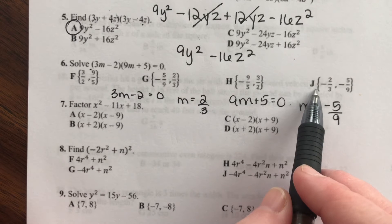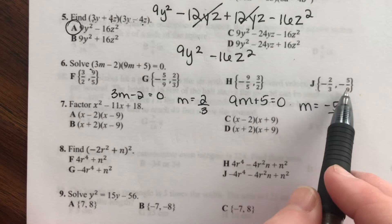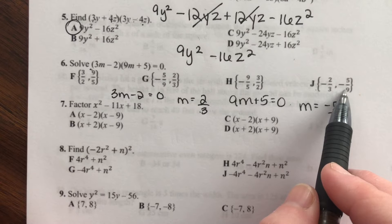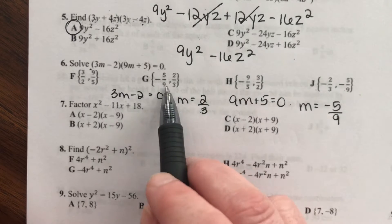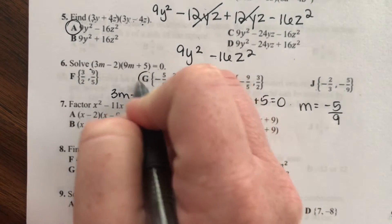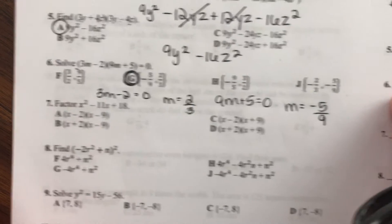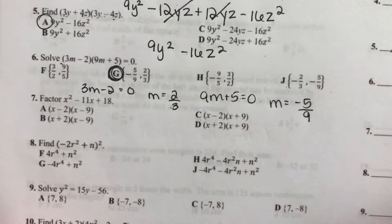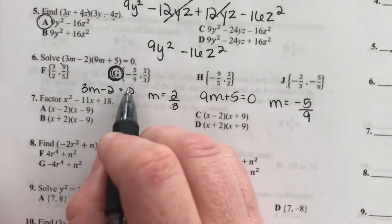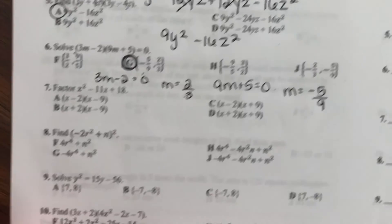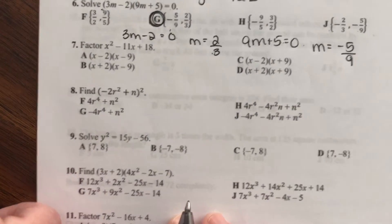So my two answers are 2/3 or negative 5/9. The answer that matches is G: negative 5/9 comma 2/3. Number 7: factor.